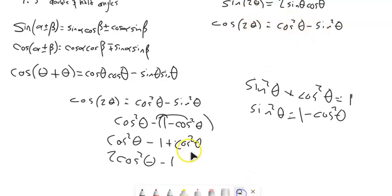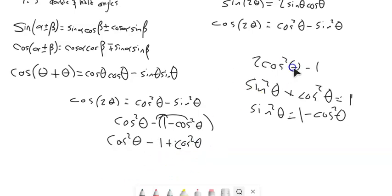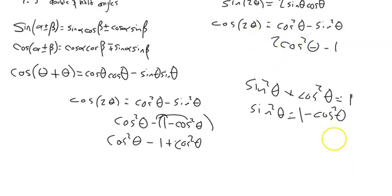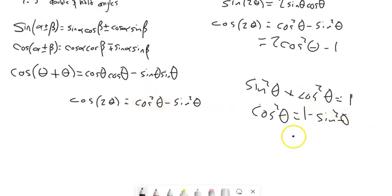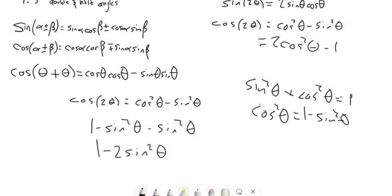These are all the same relationship, just different equivalencies. We choose which one to use depending on context. Similarly, if we solve the Pythagorean identity for cosine squared — subtracting sine squared from both sides — we replace cosine squared with 1 minus sine squared, and we get cosine of 2 theta equals 1 minus 2 sine squared theta.